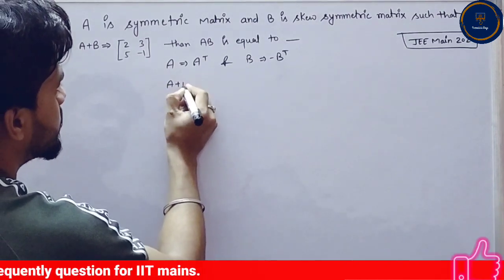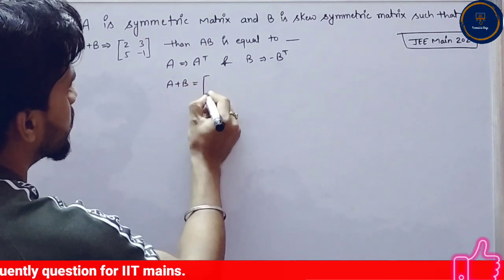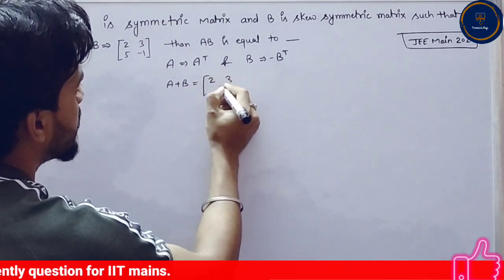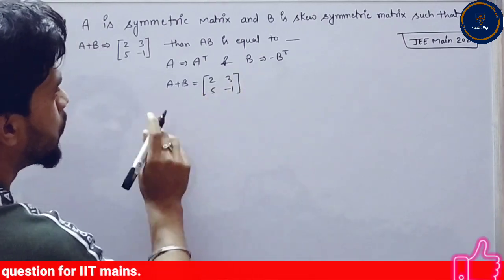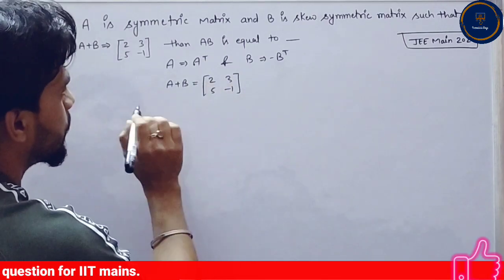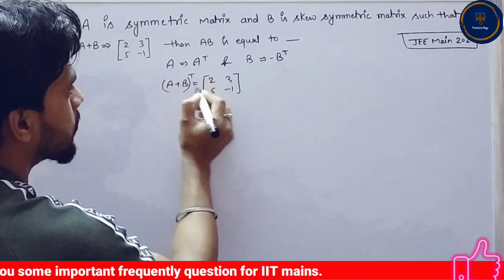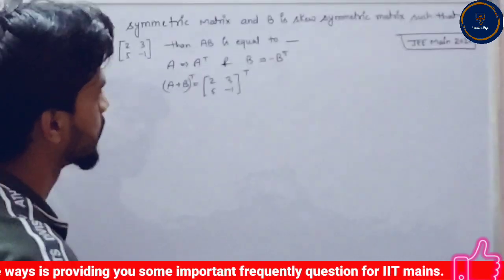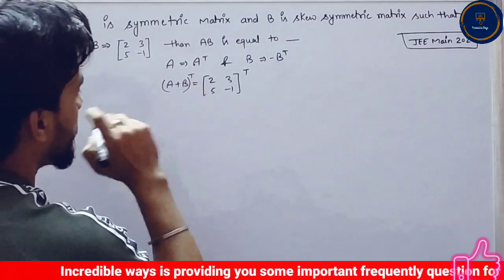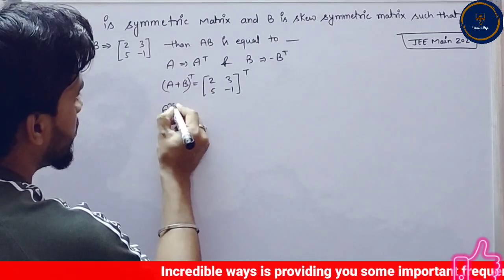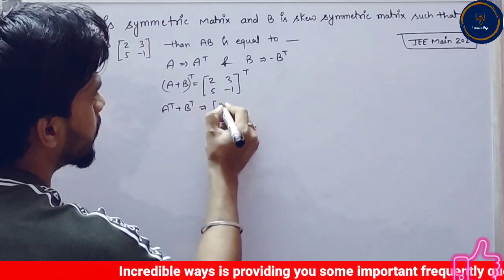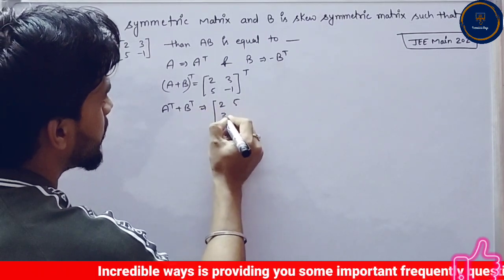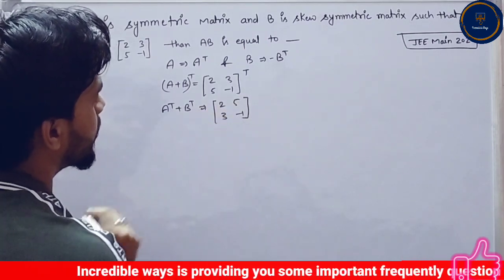Here I am going to see, A plus B is equal to the matrix [2, 3; 5, -1]. So I am going to take both sides transpose. A transpose plus B transpose is equal to [2, 5; 3, -1].